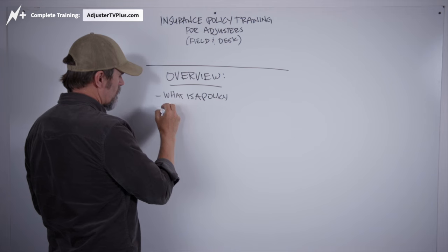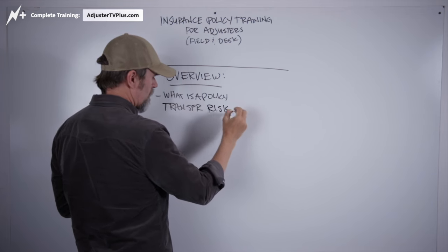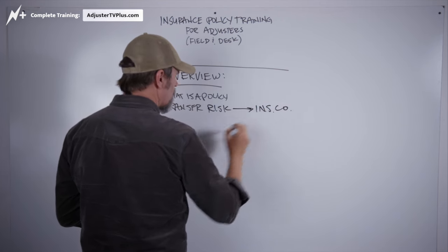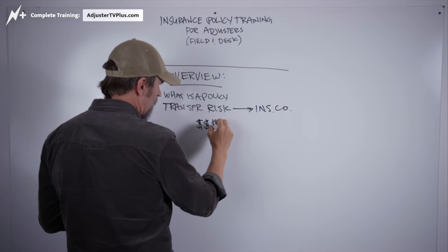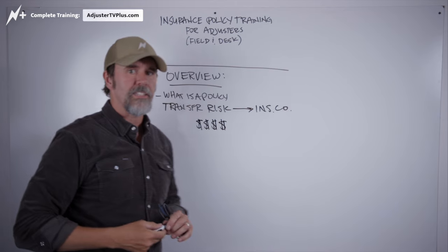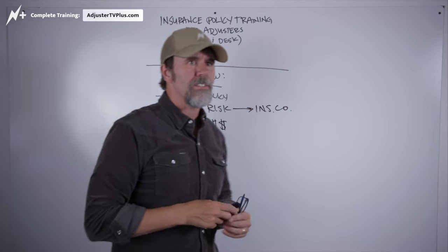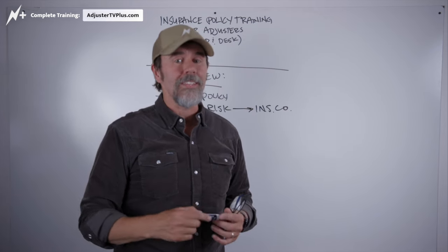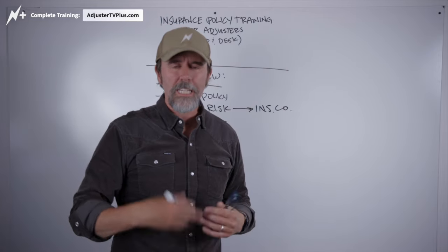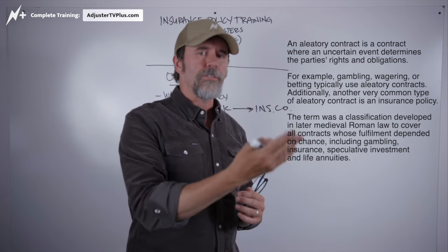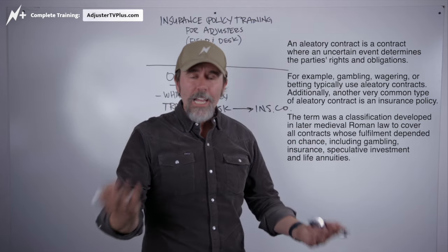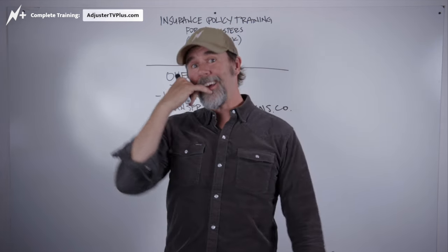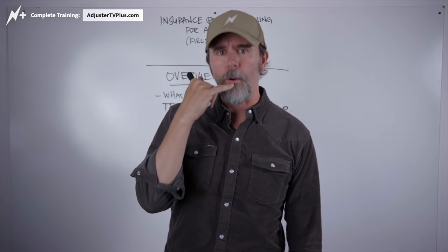We're going to transfer risk to the insurance company in exchange for money — depending on where you live and how big your house is, it could be a decent amount of money. This is what's known as an aleatory contract, which basically means the policy doesn't really kick into effect unless there's a claim. A claim is basically the policyholder calling the insurance company and saying, hey, I have some damage at my house — I think you should pay for it. That's the claim.